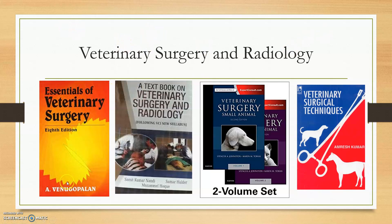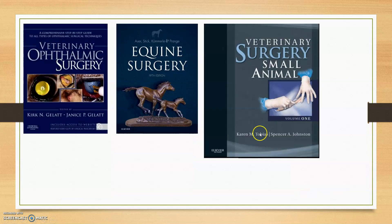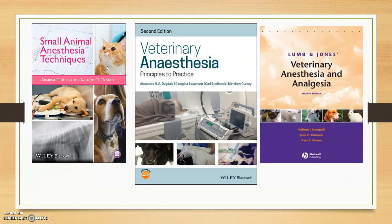For veterinary surgery, Essentials of Veterinary Surgery by Arvind Gopalan is a very good book for Indian veterinary students — published many years ago, it explains everything in a very simple manner. The Samar Halder book also contains many diagrams and is according to the new VCI syllabus (MSV60). International books are also used in veterinary surgical techniques, including books on equine surgery, which is a very good reference for equine medicine and surgery.